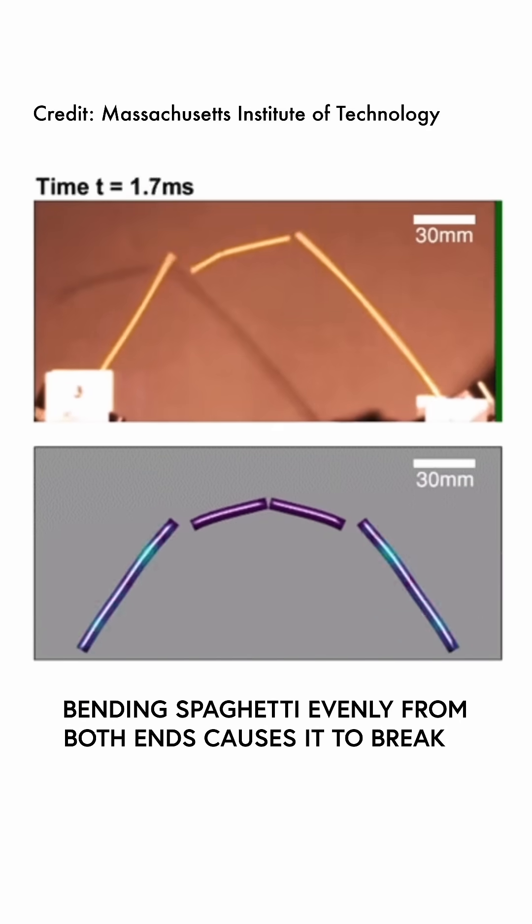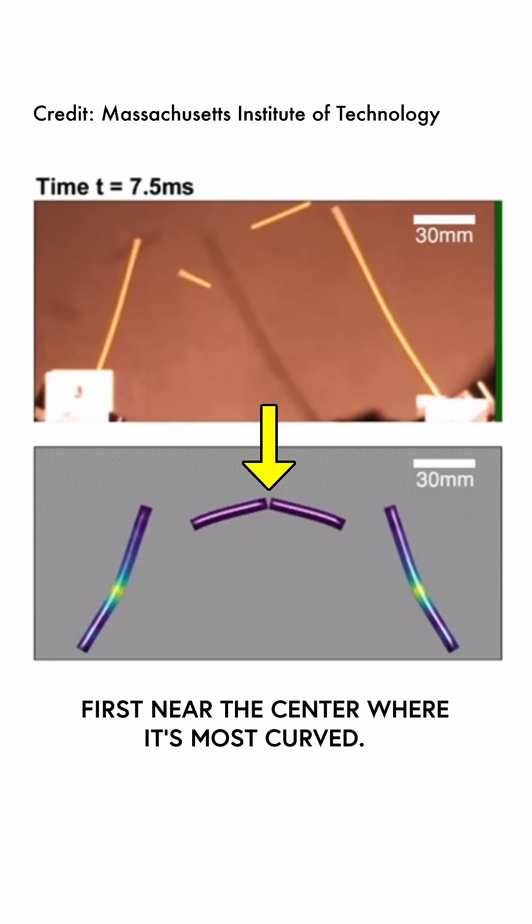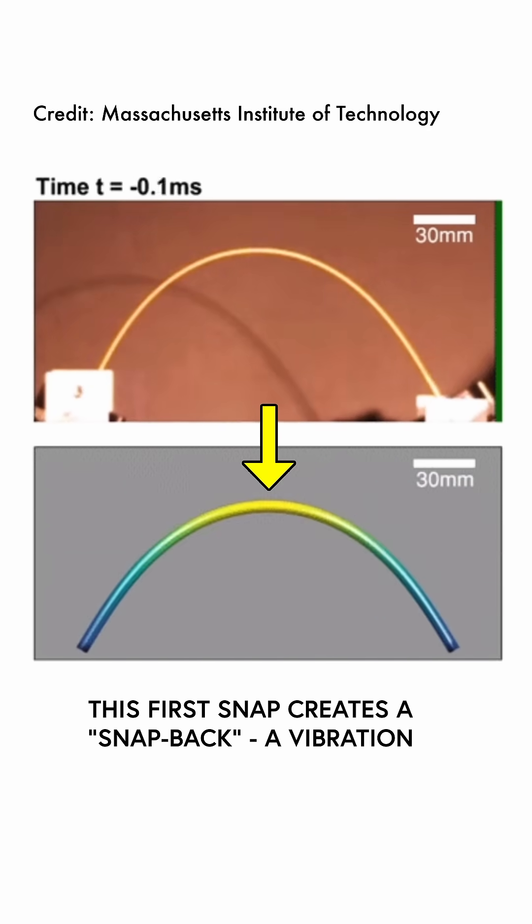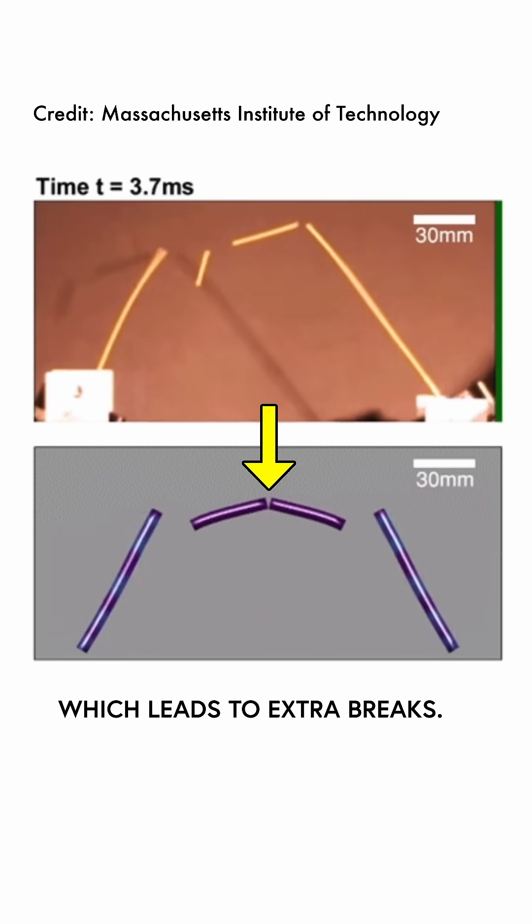Bending spaghetti evenly from both ends causes it to break first near the center, where it's most curved. This first snap creates a snap-back, a vibration which leads to extra breaks.